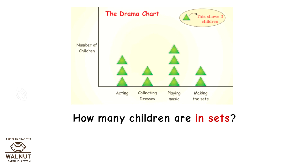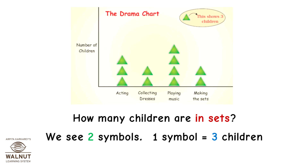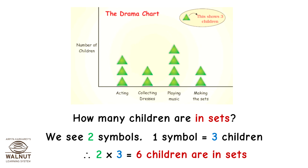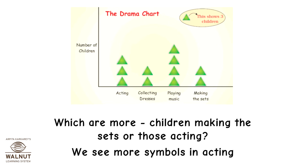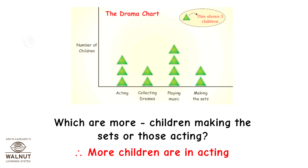How many children are in sets? We see two symbols; one symbol is equal to three children, so 2 into 3 which is equal to six children are in sets. Which are more — children making the sets or those acting? We see more symbols in acting, therefore more children are in acting.